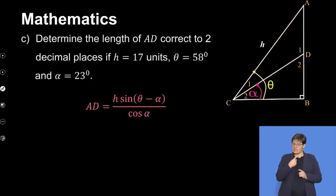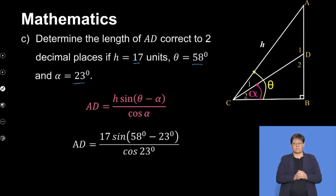They asked us to determine the length of AD correct to two decimal places. This is pretty simple because now they give us the actual values. This is just basic substitution. You're just going to substitute the values in and get an answer with your calculator: 10.59 units.